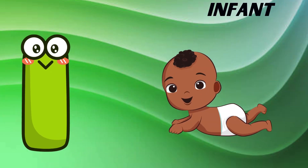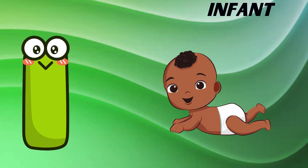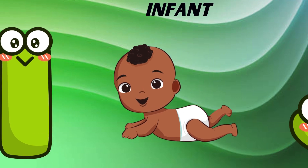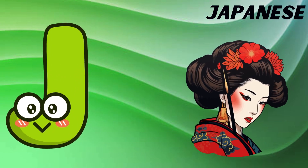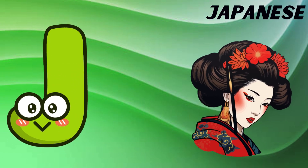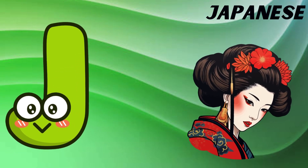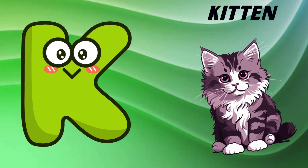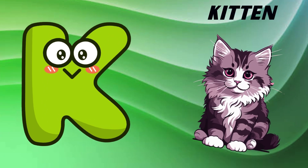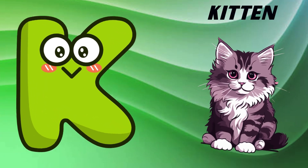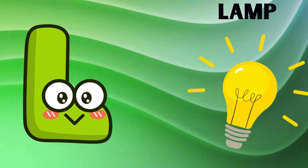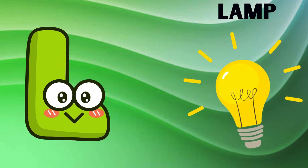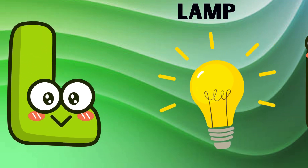I is for infant, i-i-infant. J is for Japanese, j-j-Japanese. K is for kitten, k-k-kitten. L is for lamp, l-l-lamp.